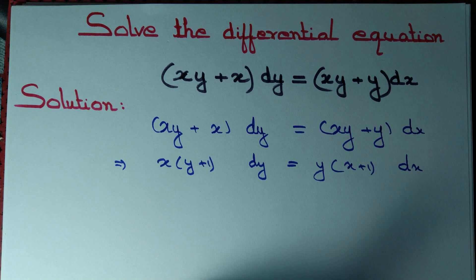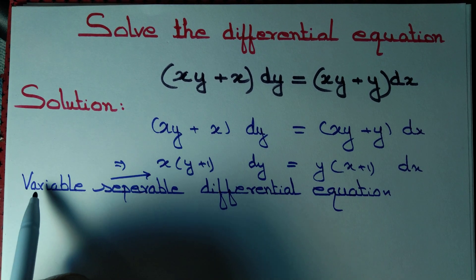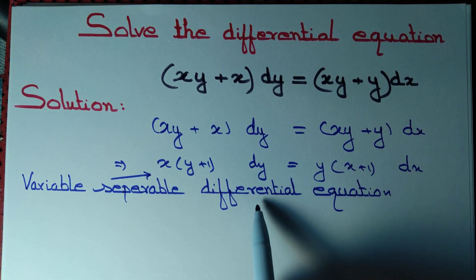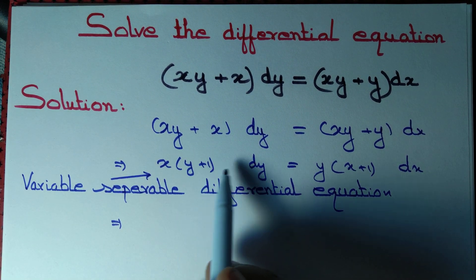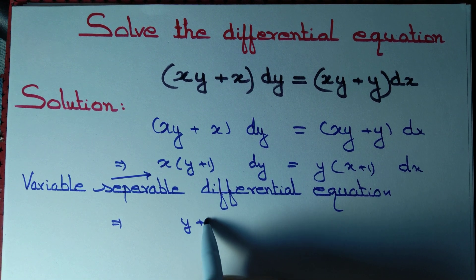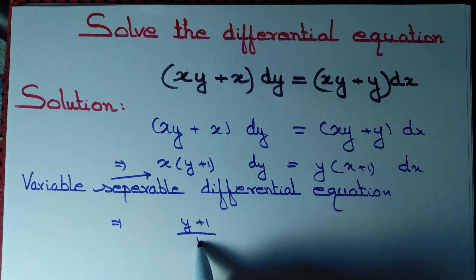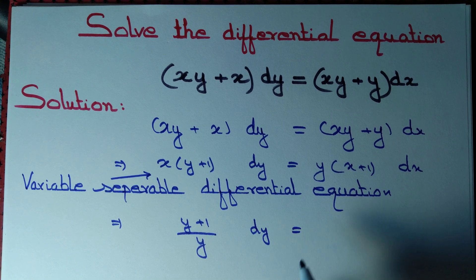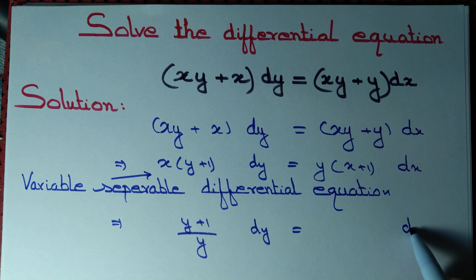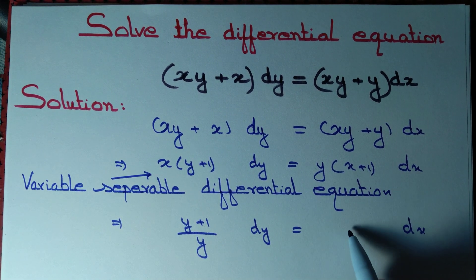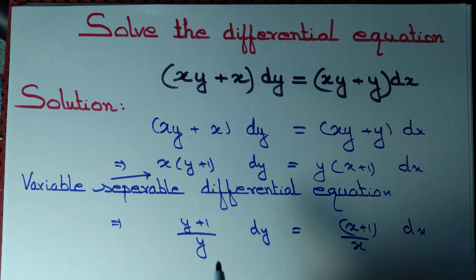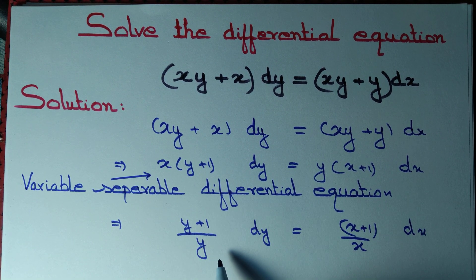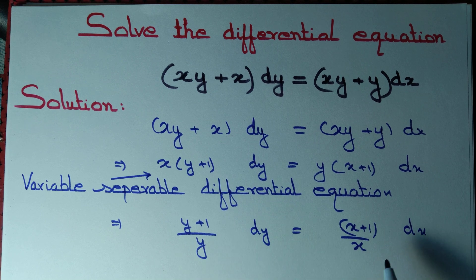So this is a variable separable differential equation. We write all the terms that involve y to the left hand side: (y + 1) divided by y, dy. All the terms that involve x to the right hand side: (x + 1) divided by x. The left hand side involves terms containing y only and the right hand side involves terms containing x only.